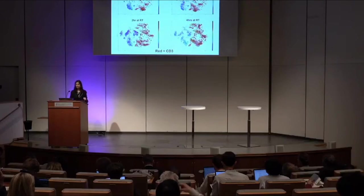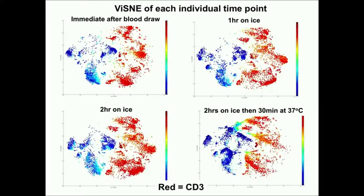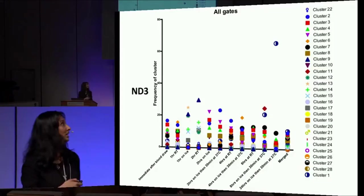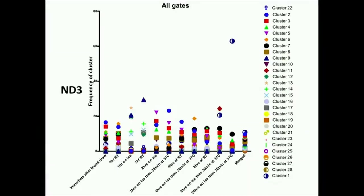Similarly, when we do a CyTOF analysis from these same samples, looking at just CD3 — though there are 36 markers in the CyTOF panel — you can see over time that if you process immediately versus letting things sit, all of these subsets start to change. Around one hour is when it's the best for immediate processing. We looked at all of the clusters in the CyTOF analysis, and clusters change over time if we're not careful. We redefine subsets of cells based on the amount of time they're sitting, because they lose activation markers and gain other markers.